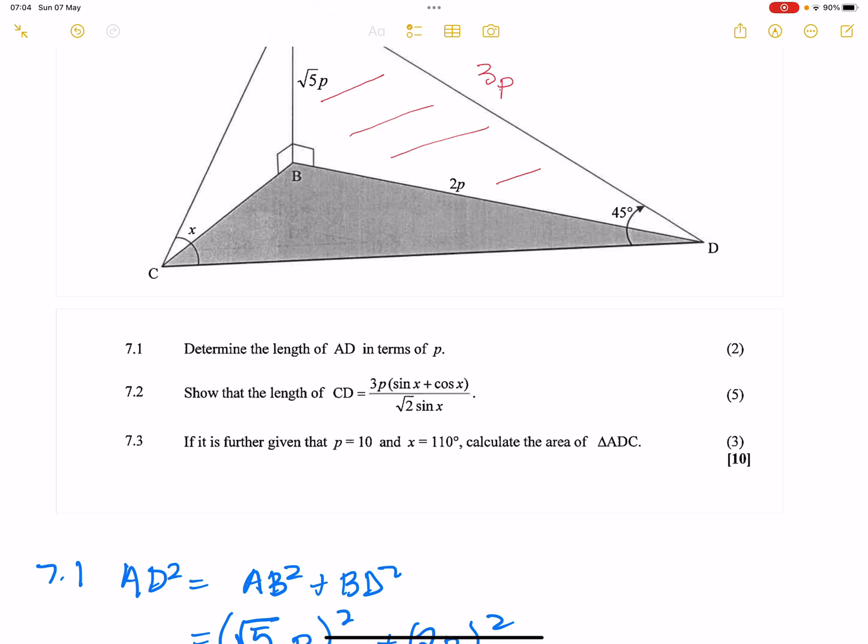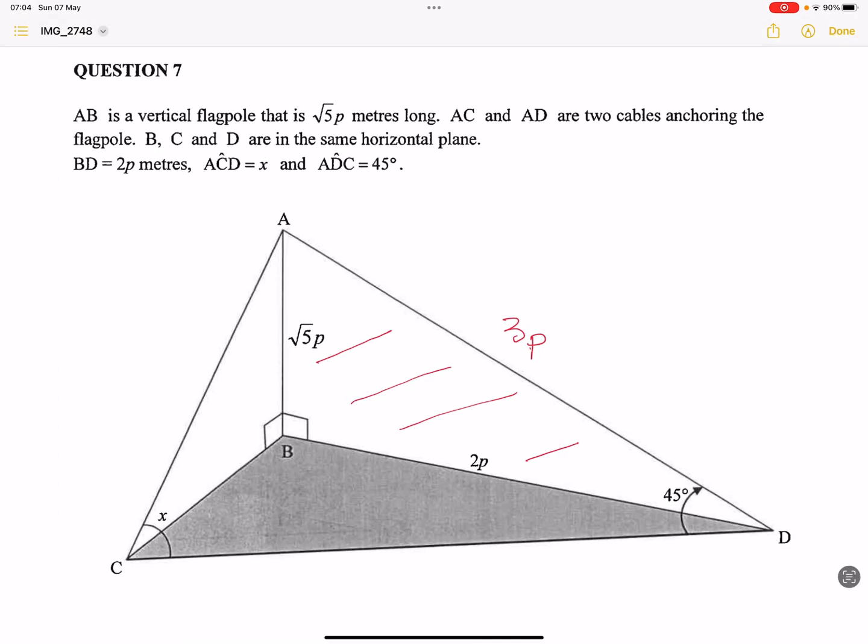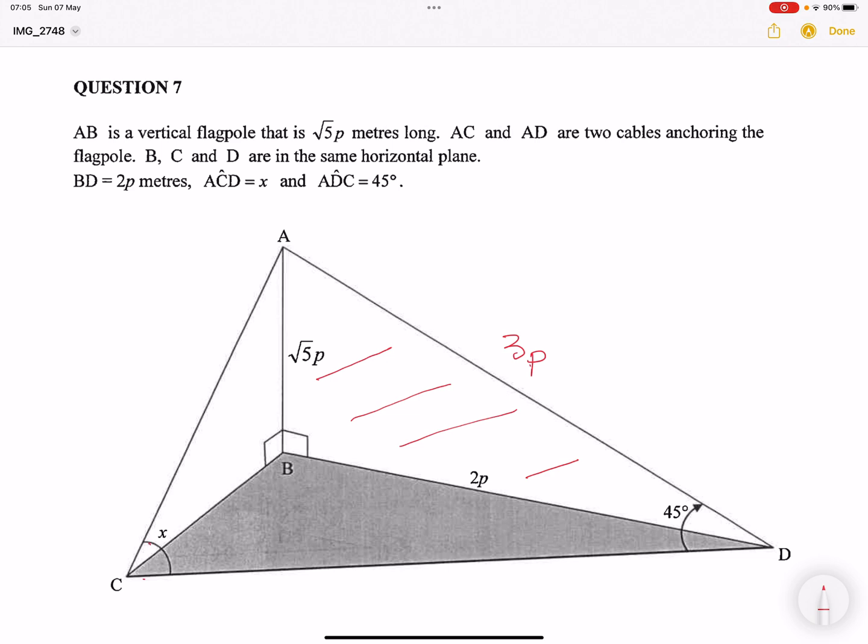They say to us, show that the length of CD is given by that expression there. So now we're going into, I want you to note. So now that I have got the value of AD, and I've got that 45 degree angle, as well as 3P, in this case I can work within this triangle, this bigger triangle here. There is my triangle there. And what am I looking for? I'm looking for this side here. And I'm going to use the sine rule.